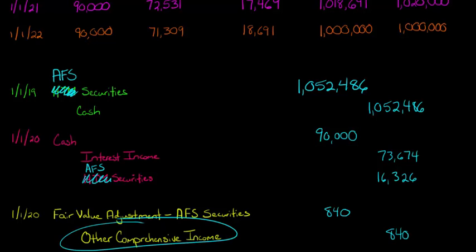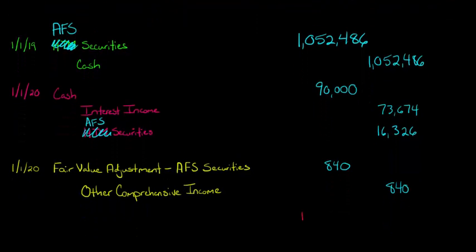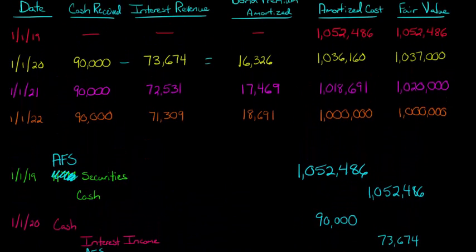We're crediting Other Comprehensive Income, similar to equity securities when they're available for sale. Let me just make sure you understand where this $840 came from. That $840 is the $1,037,000 fair value minus the amortized cost of $1,036,160. So you just take the difference of the fair value and the amortized cost.